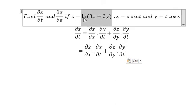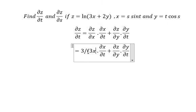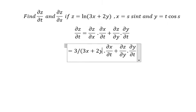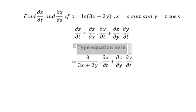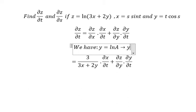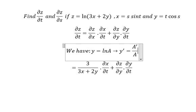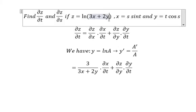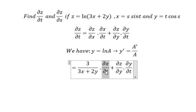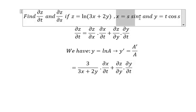For this one, we do the first derivative of Z with respect to X, so we have 3 over (3S + 2Y). Because we are doing the first derivative with respect to S, we only keep the S term — the term without S gives zero.